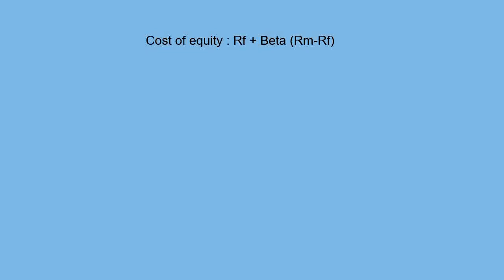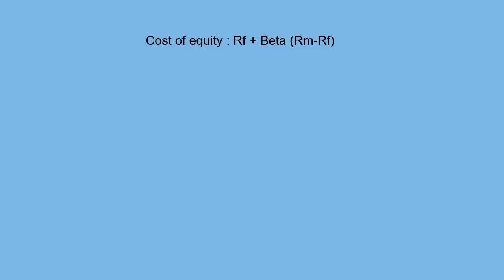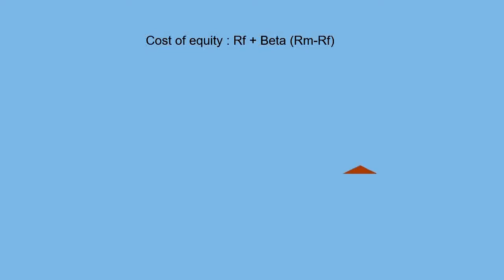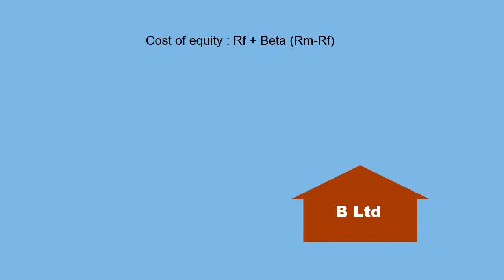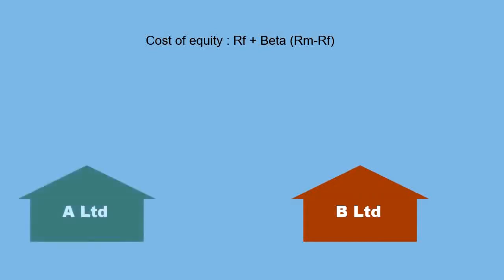The problem you will encounter is regarding beta. Let's say you are evaluating an investment proposal for company B, which is a new company — so obviously it will not have a beta of its own. The easiest way is to take the beta of another company which is already operating and assume that to be the beta of the company you are planning to evaluate. So let us say there is company A, already operating in the same activity, with a beta of 1.5. Can we assume the beta of company B will be the same as company A? No, you cannot.